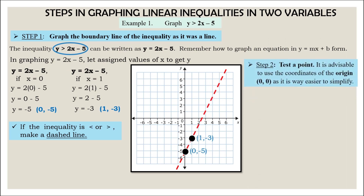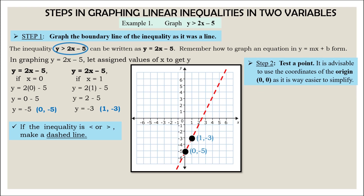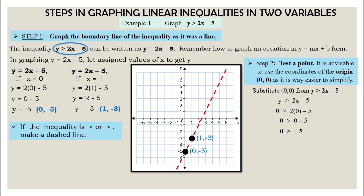Step 2: Test a point. It is advisable to use the coordinates of the origin, (0, 0), as it is easier to simplify. Substitute (0, 0) into the inequality y greater than 2x minus 5. You get 0 greater than negative 5. Is 0 greater than negative 5? Yes, that is true.